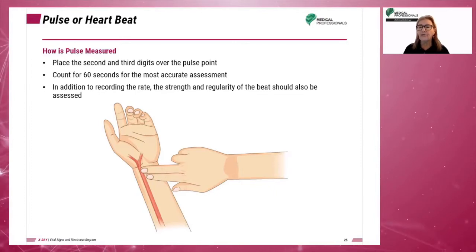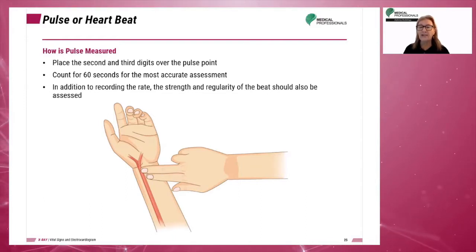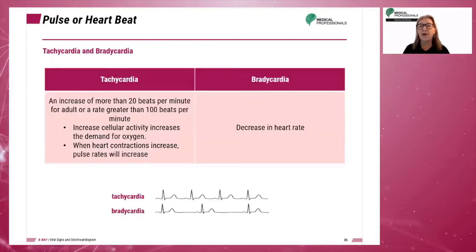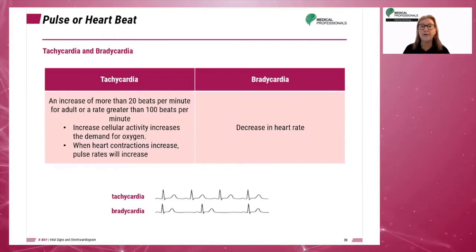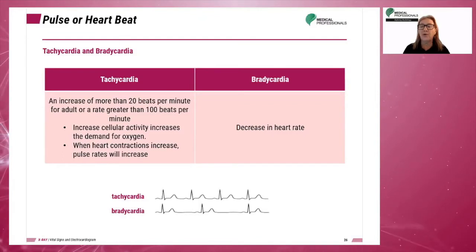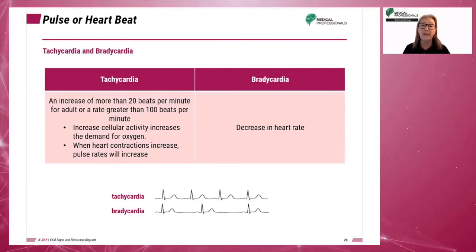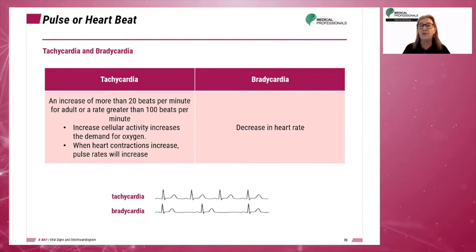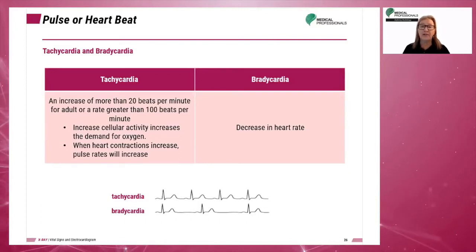Tachycardia refers to a rate over 100 beats per minute, and bradycardia is less than 60 beats per minute. With tachycardia, there is an increase in cellular activity which increases the demand for oxygen. When heart contractions increase, the pulse rate also increases. Bradycardia is a decrease in the heart rate.